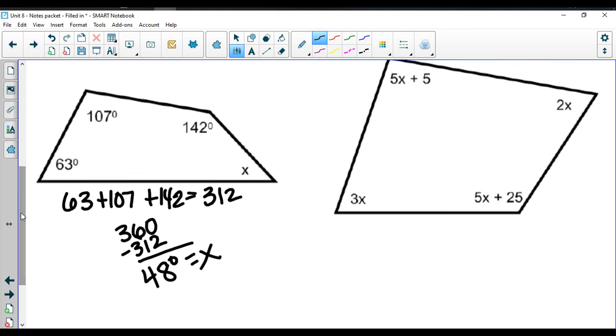This next one I do have some more complicated expressions. I'm going to have to write an equation. My first angle is 5x plus 5. My second angle is 2x. I have 5x plus 25. And I also have 3x. Altogether, these angles are going to equal 360.